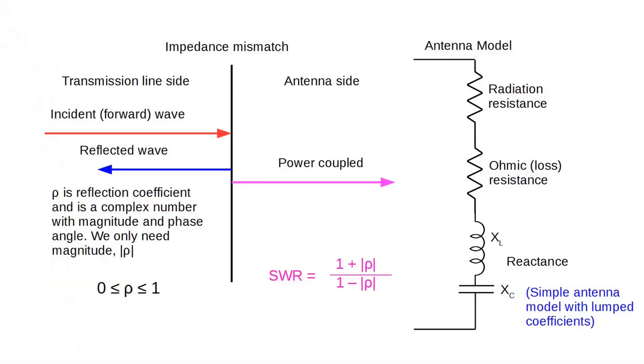We will focus entirely on the connection between the transmission line and the antenna. This is the point of impedance mismatch. The incident or forward wave is traveling from your transceiver toward the antenna. It hits the impedance mismatch where the 50 ohm transmission line meets the antenna input. If the antenna presents a 50 ohm purely resistive impedance, there will be no reflection.